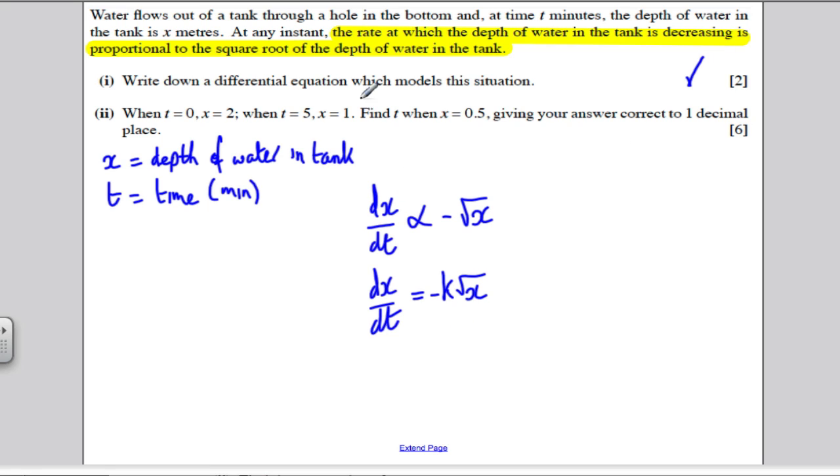Part two asks us to go on and solve this with particular boundary conditions, giving our answer to one decimal place. So what we can do is we can separate variables here. For part two, the first thing we would do is we would separate variables and integrate.